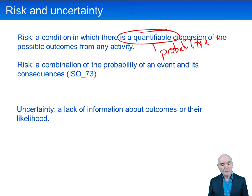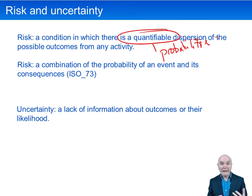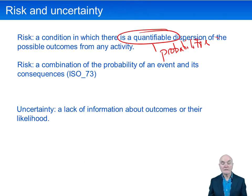So quantifiable dispersion — and of course there are different possible outcomes: success, failure, high cost, low cost, high sales, low sales, and so on.